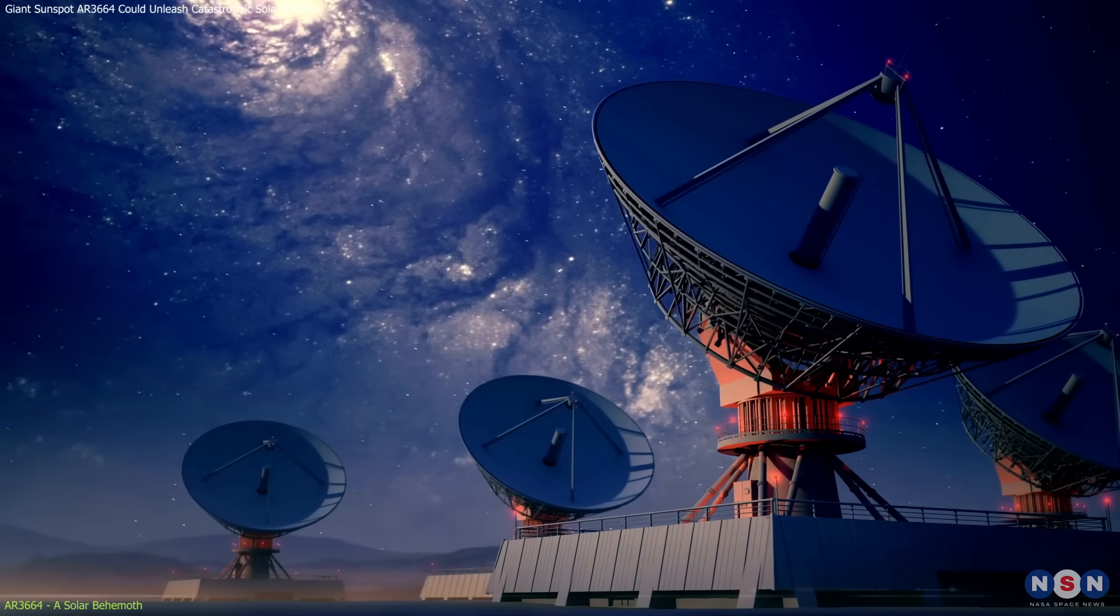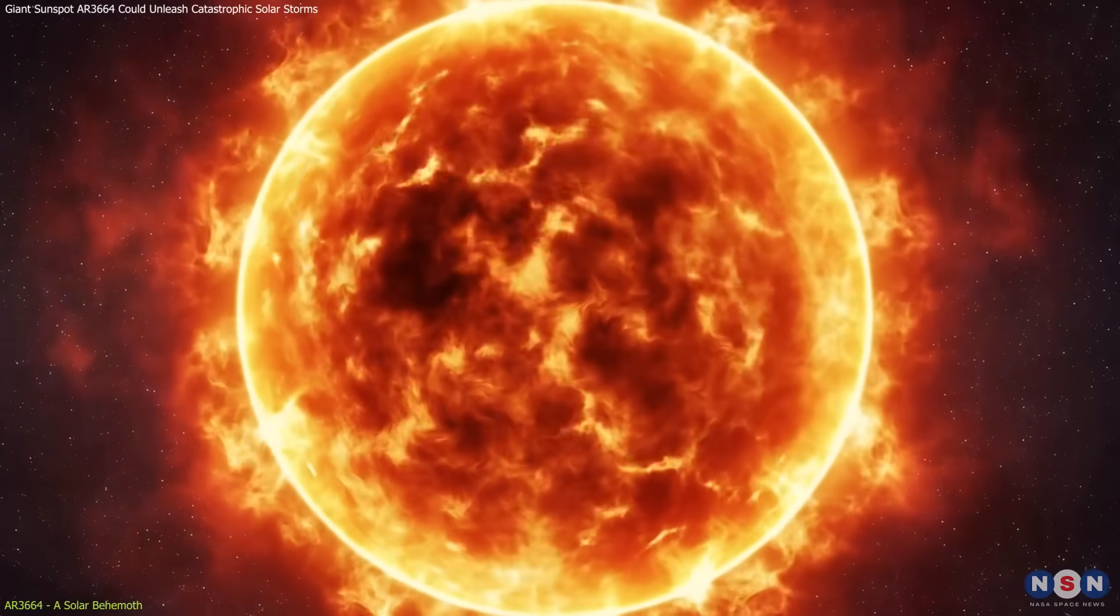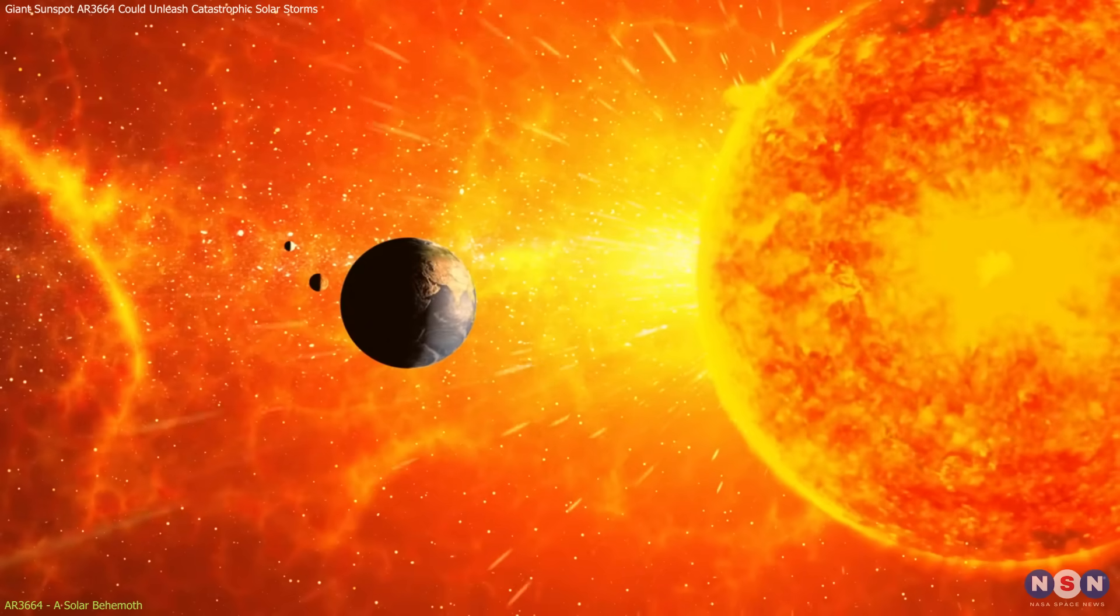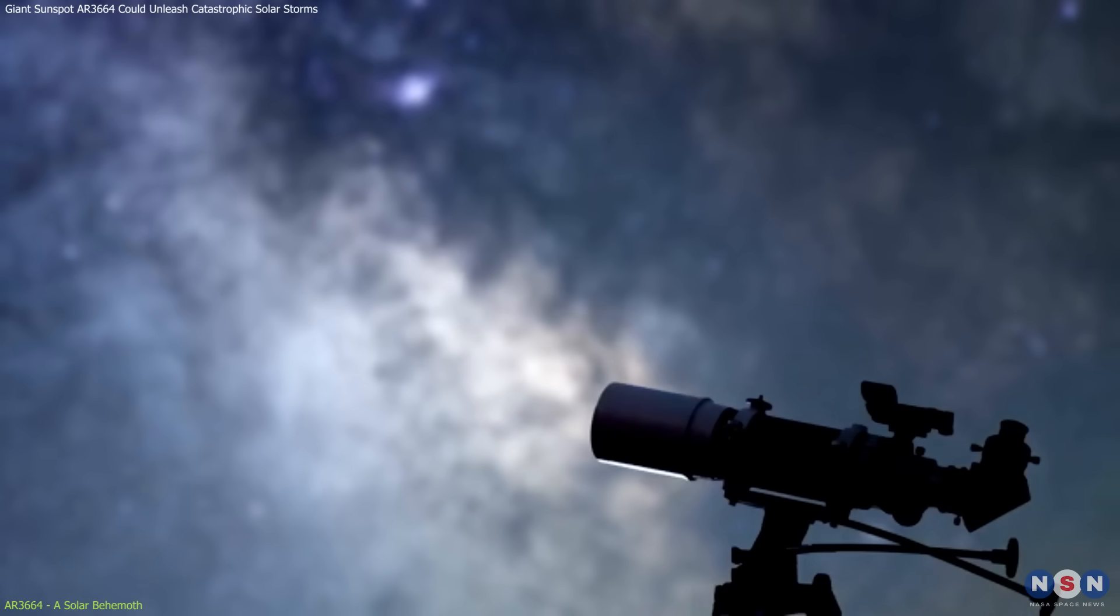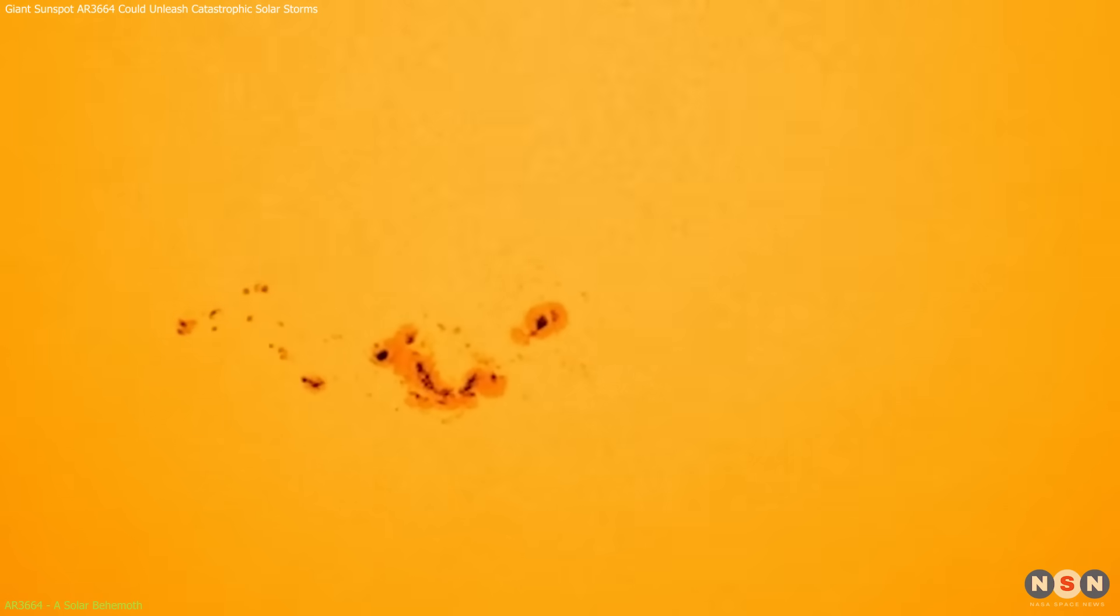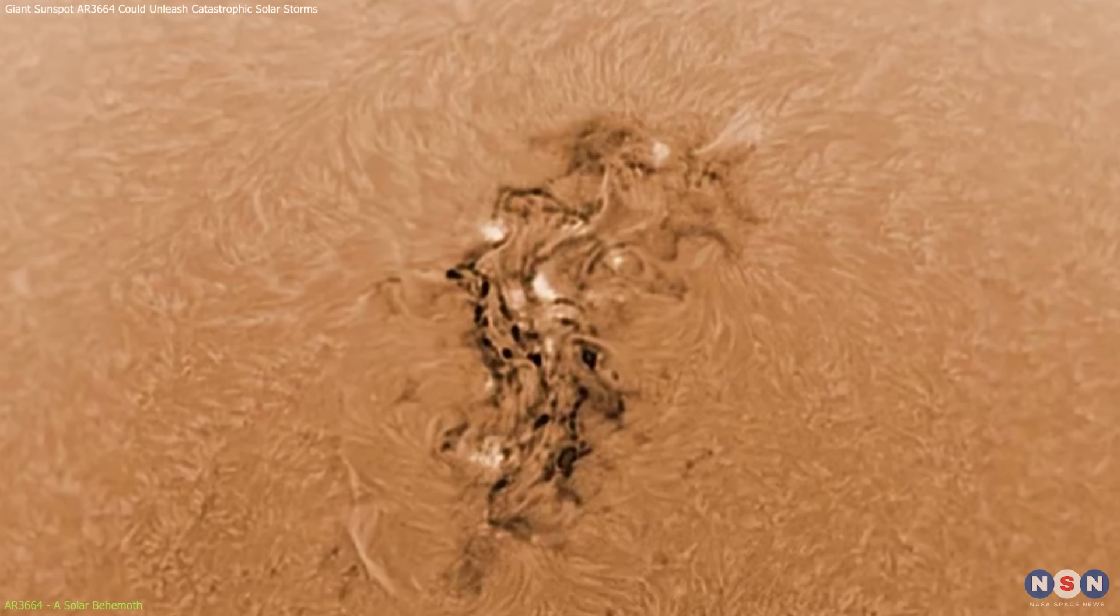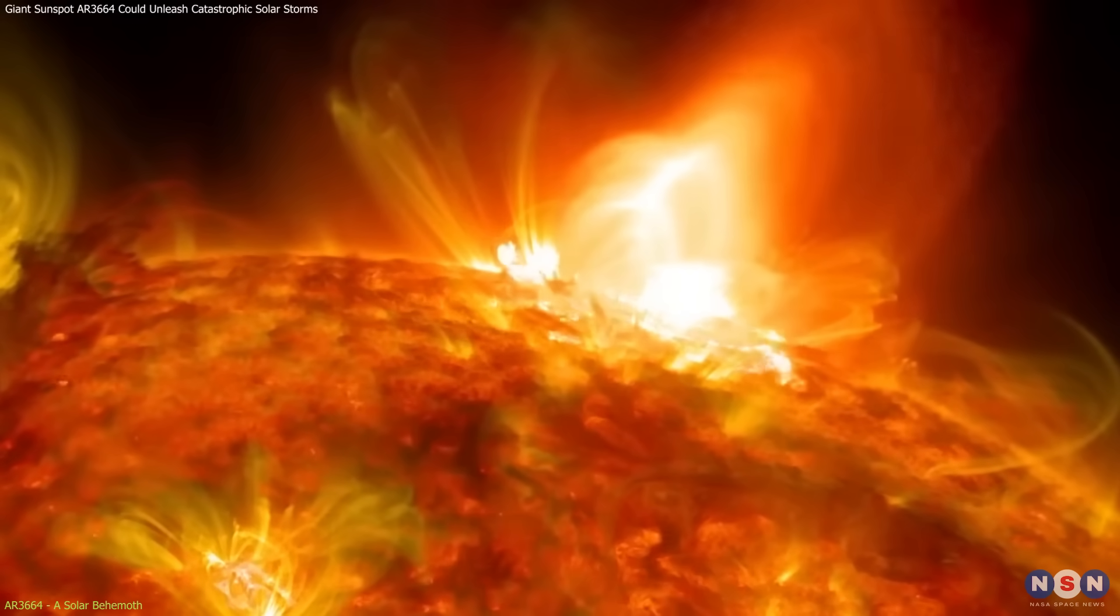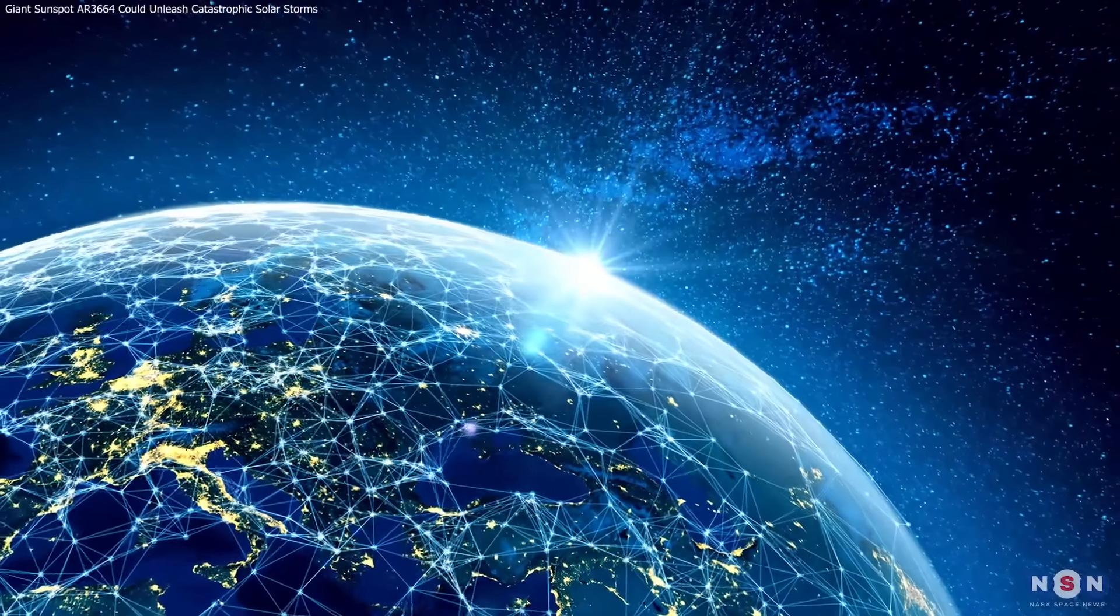Observatories and science centers around the world are leveraging this rare event to teach people about the sun's dynamic nature and its effects on Earth. Through projected images on sidewalks or screens, even those without a telescope can watch as this specific sunspot rotates with the sun and changes over days. As we approach the peak of the sun's 11-year activity cycle, the insights gained from monitoring this sunspot are crucial. Observing and studying it underscores the importance of these celestial phenomena and their significant impact on our technology-dependent world.